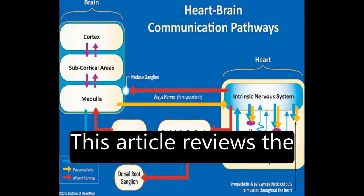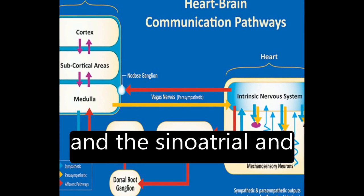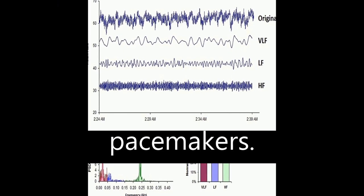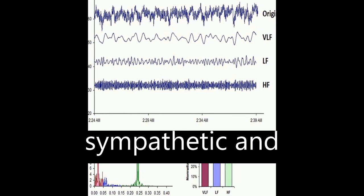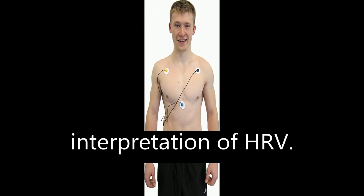This article reviews the neural regulation of the heart, its basic anatomy, and the sinoatrial and atrioventricular pacemakers. It also discusses sympathetic and parasympathetic influences on the heart and examines the interpretation of HRV.